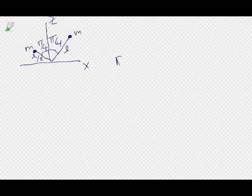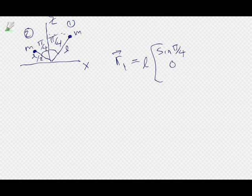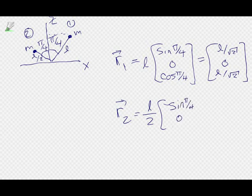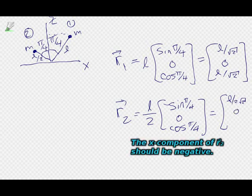I can figure out what the moment of inertia tensor is. The position of R1 — the displacement from the origin — with one mass on the positive x-axis side, is L times sine(pi/4), 0, cosine(pi/4), and sine and cosine of pi/4 is just 1 over root 2. The position of R2 is L over 2 times minus sine(pi/4), 0, cosine(pi/4) — giving L over 2 root 2, 0, L over 2 root 2.